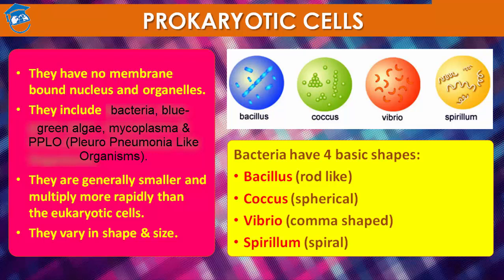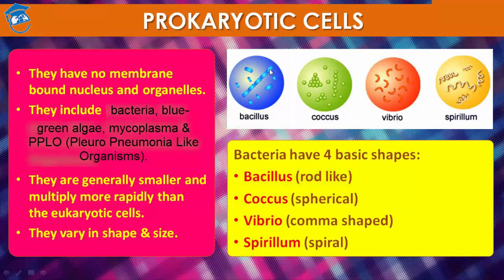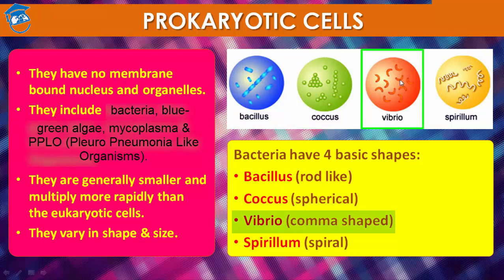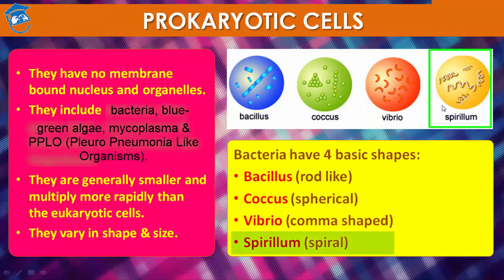Prokaryote cells may vary greatly in shape and size. The four basic shapes of bacteria are: bacillus (rod-like), coccus (spherical), vibrio (comma-like), and spirillum (spiral-like). These are the four basic shapes of bacteria.